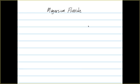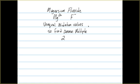In a second example, in magnesium fluoride, we see that the magnesium forms a 2+, and the fluoride is a 1-. Since we have unequal oxidation values or charges, we're going to find a common multiple. The common multiple between the 2 and the 1 is 2.